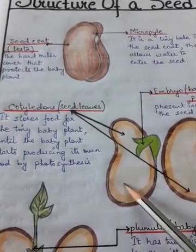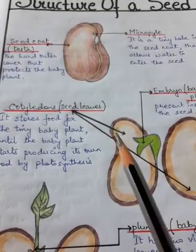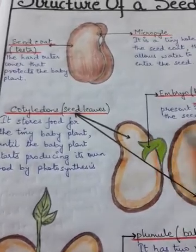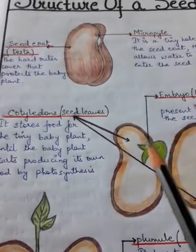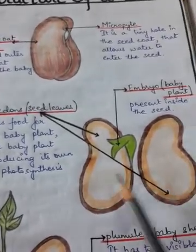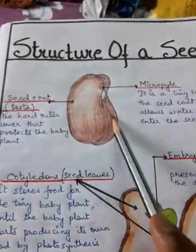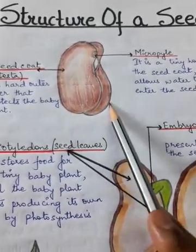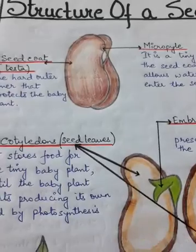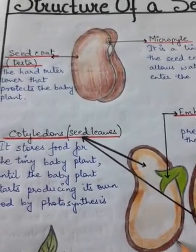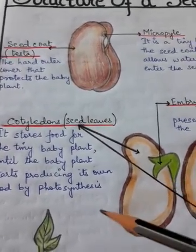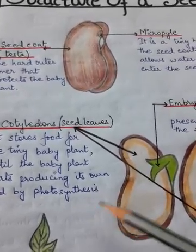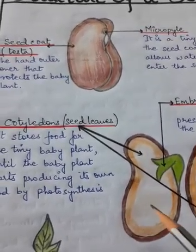Some seeds have only one seed leaf, meaning one cotyledon — these are called monocotyledons, or monocots. 'Mono' means one. Seeds with two seed leaves, or two cotyledons, are called dicotyledons, or dicots — 'di' means two. All grains are monocots, and all pulses are dicots.